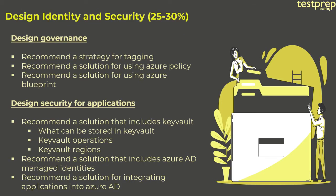Number three: Design Governance, divided into three parts — recommend a strategy for tagging; recommend a solution for using Azure Policy; recommend a solution for using Azure Blueprint. Number four: Design Security for Applications, divided into three parts — recommend a solution that includes Key Vault (covering what can be stored, Key Vault operations, and Key Vault regions); recommend a solution that includes Azure AD managed identities; recommend a solution for integrating applications into Azure AD.